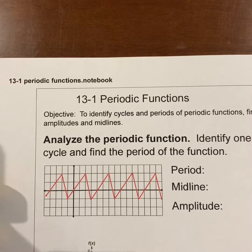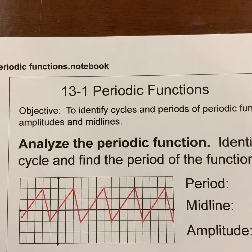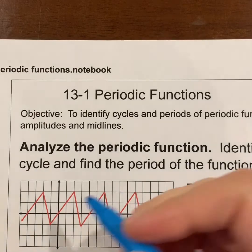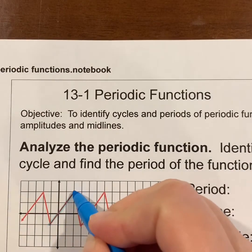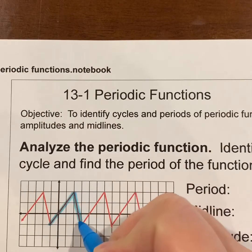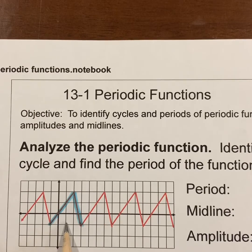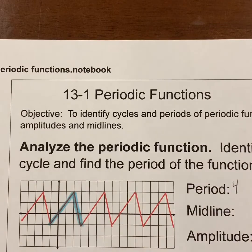We're going to take a look at three different periodic functions. For now, all we're going to do is identify one cycle and find the period. I see a cycle here as starting at the bottom, coming up, and then going back down. That same pattern repeats over and over again, so I've identified one cycle. The period is the horizontal distance. If I start here, counting one, two, three, four — the period of this periodic function would be four.